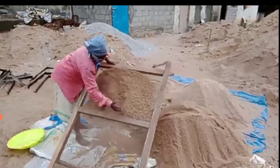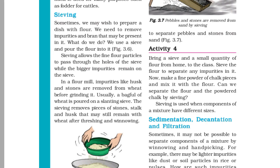Sieving removes pieces of stones, stalks, and husks that may still remain with wheat after threshing and winnowing.